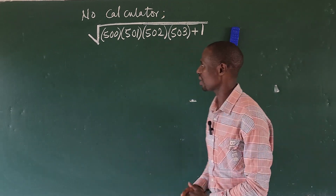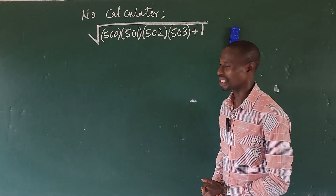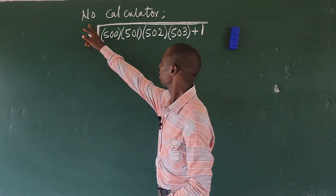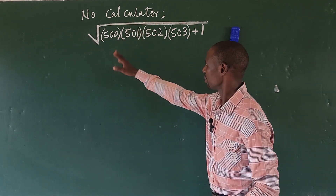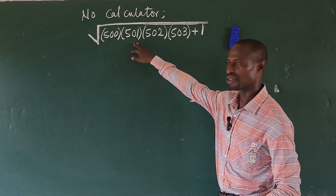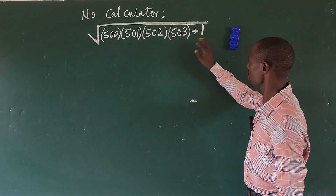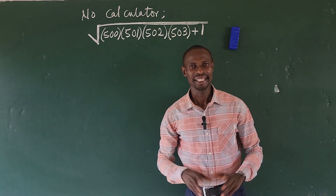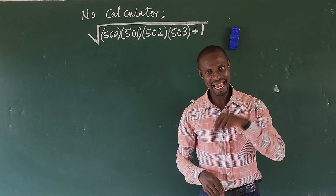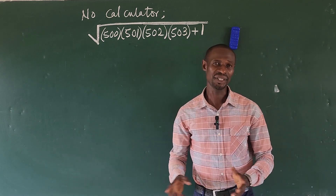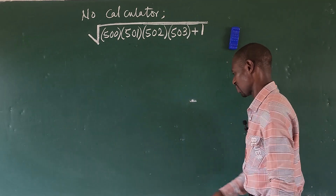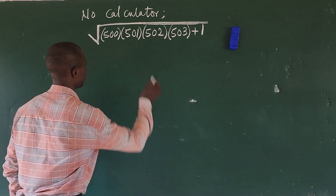Welcome to today's class. Today we have a nice math challenge before us. The question gives us: without the use of a calculator, simplify the square root of 500 times 501 times 502 times 503 plus 1. I've made a video on this already, but there was a small error at the end, so I took it down to reproduce this.